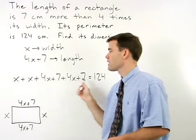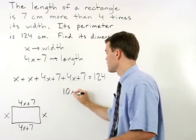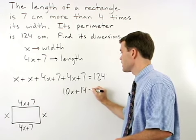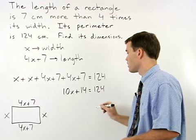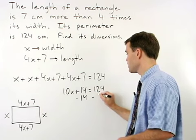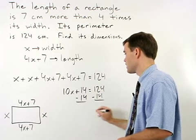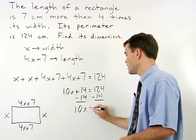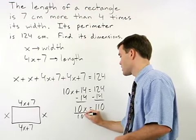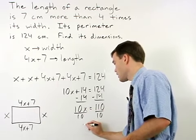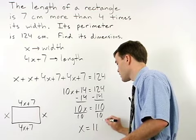Simplifying on the left side, we get 10x plus 14 equals 124. Subtract 14 from both sides and 10x equals 110. Divide both sides by 10, and x equals 11.